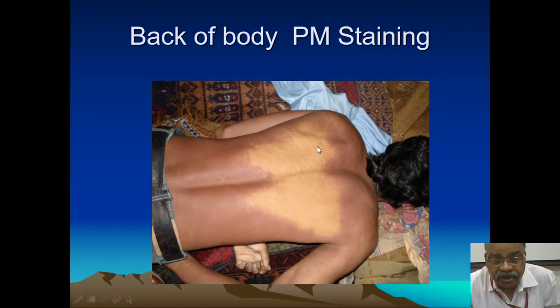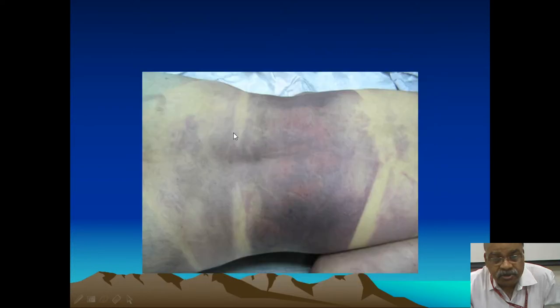Another example shows a female body using a bra — you can see clear marks where the bands of the clothing put pressure over the body, so post-mortem staining is not appreciated in those areas.